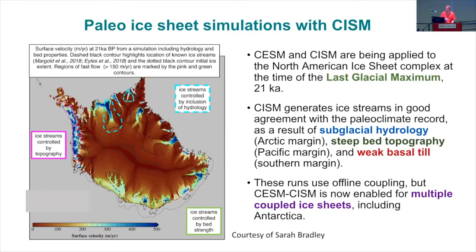Moving to the last glacial maximum about 21,000 years ago, you had a huge ice sheet covering what's now Canada and the northern US. These were the first experiments to use a new model of subglacial hydrology that we developed. Paleo records show where there were ice streams 21,000 years ago, and the model does pretty well at putting ice streams where we think they were — the fast-flowing blue regions in the figures. The model generates ice streams for different reasons in different parts of the ice sheet: some combination of subglacial hydrology making the bed more slippery, steep topography at the southern margin, or weak basal till that allows the ice front to advance into what's now the northern US.